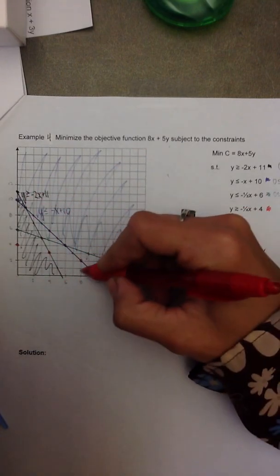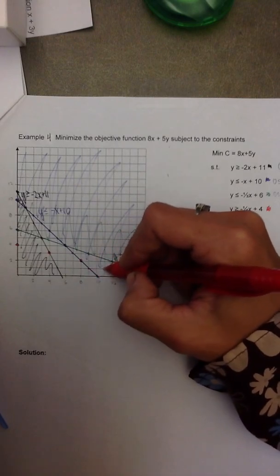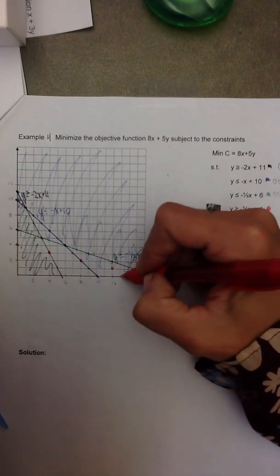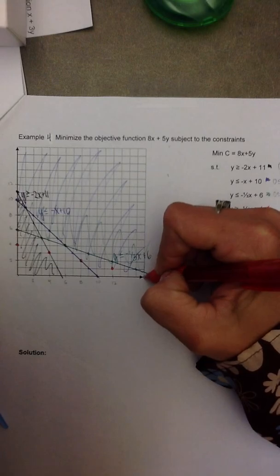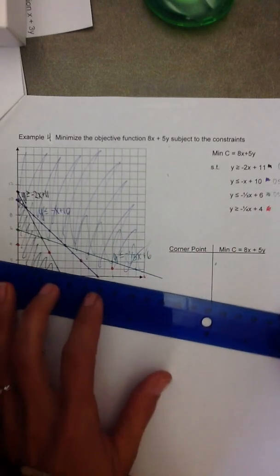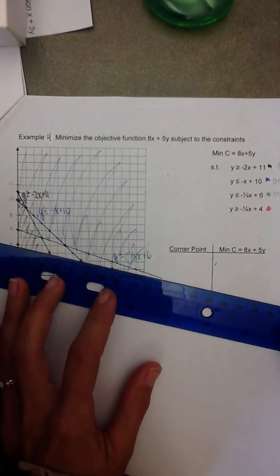Down one and right... two times on the same line. Down one and right four. Down one, right four. Use my straight edge to connect the dots.